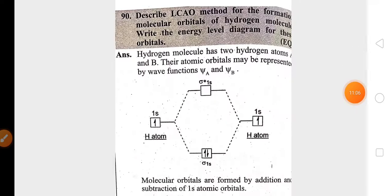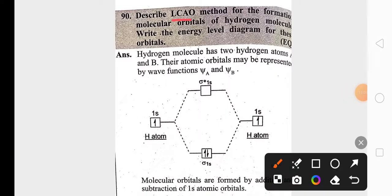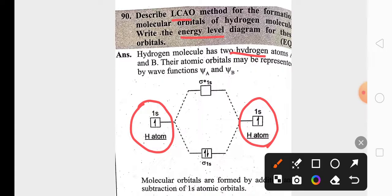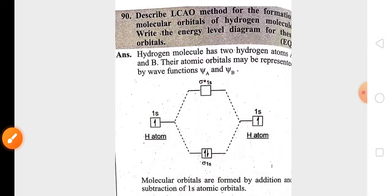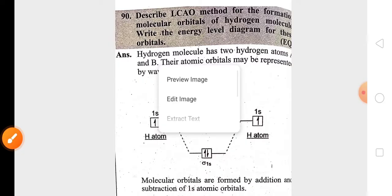Another three-mark question involves showing the formation of the hydrogen molecule using LCAO with an energy level diagram. Two hydrogen atoms, each with one unpaired electron, combine to form two molecular orbitals: one bonding molecular orbital (σ1s²) and one anti-bonding molecular orbital (σ*1s⁰). This gives the energy level diagram of the hydrogen molecule according to LCAO.